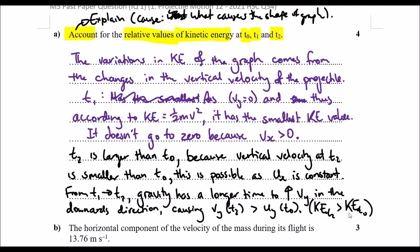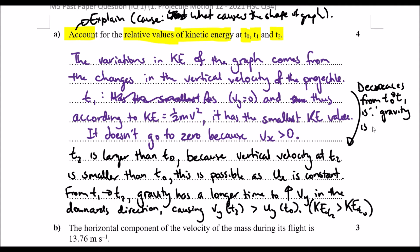You could also explain why there is a drop from t0 to t1: the decrease from t0 to t1 is because gravity is reducing the vertical velocity as the projectile moves upward. That's another thing you could include. That pretty much covers everything we want to talk about in terms of these variations.